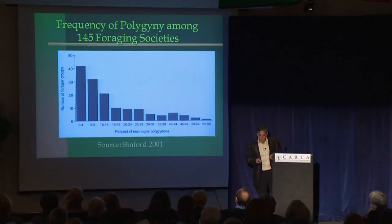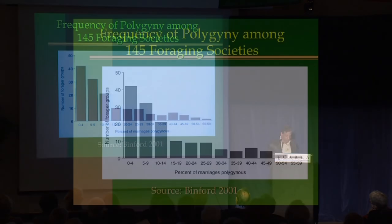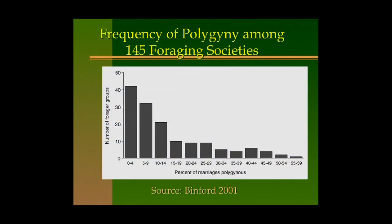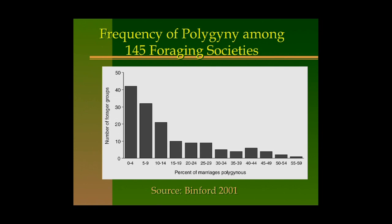As a result, polygyny is relatively uncommon in foraging societies—in almost 50% of societies less than 5% of marriages are polygynous. Summing this up, most marriages in hunter-gatherer societies are monogamous.